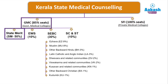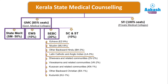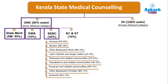EWS (Economically Weaker Section) gets 10%, and SEBC gets 30%, broken down as: Ezhava (EZ) 9%, Muslim (MU) 8%, Other Backward Hindu (BH) 3%, Latin Catholic and Anglo Indian (LA) 3%, Dheevara and related communities (DV) 2%, Vishwakarma and related communities (VK) 2%, Kusavan and related communities (KN) 1%, Other Backward Christians (BX) 1%, and Kudumbi (KU) 1%. SC and ST categories together include 10%.